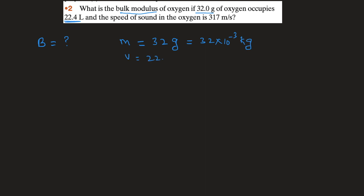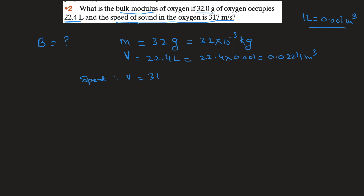The volume of oxygen is 22.4 liters. Since one liter equals 0.001 cubic meters, 22.4 liters becomes 0.0224 cubic meters. The velocity of sound in oxygen is 317 meters per second. We know that velocity is given by v = sqrt(B / rho). Squaring both sides gives v² = B / rho, so bulk modulus B = v² × rho.